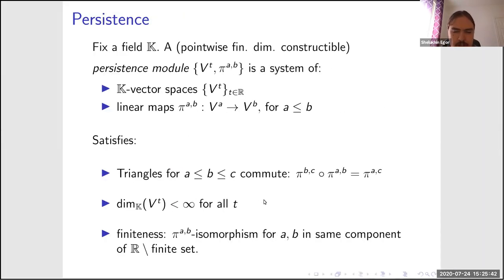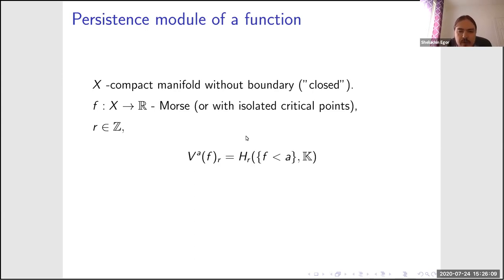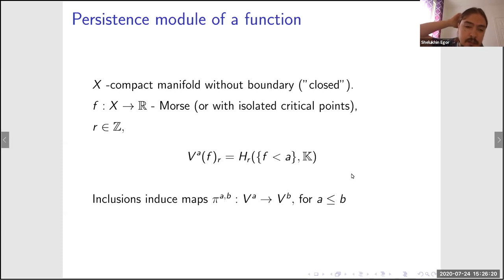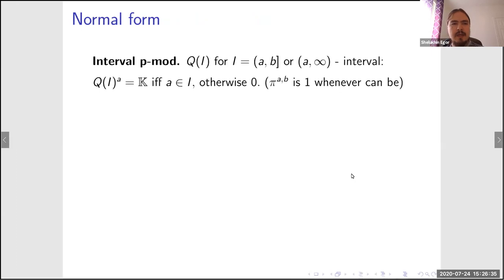It is nice to require that the dimensions of all these vector spaces are finite. For example, given a closed manifold with a Morse function — or a function with isolated critical points — you can fix a degree and look at the homology of the sub-level sets in that degree with given coefficients. This forms a persistence module, with inclusion maps inducing the structure maps.